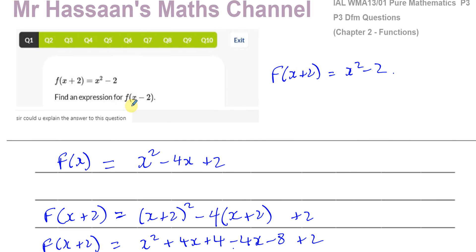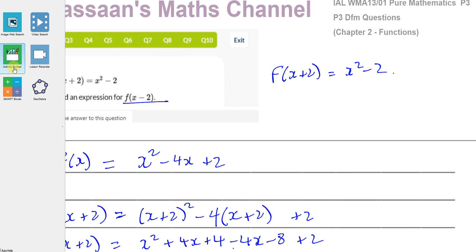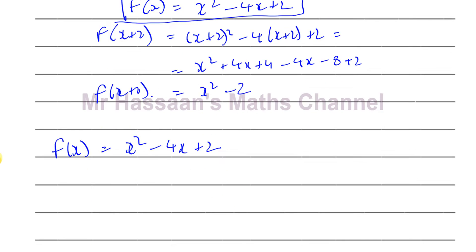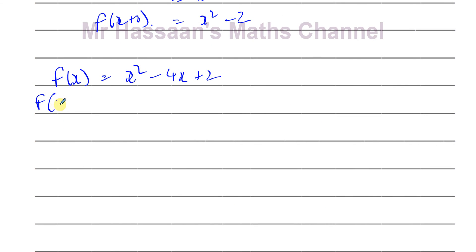It says, find an expression for f(x - 2). So now what we've got to do is substitute x minus 2 inside this function. So we replace the x with x minus 2. You have (x - 2) squared minus 4 times (x - 2) and plus 2, which gives you x squared minus 4x plus 4 minus 4x plus 8 plus 2. So you have x squared minus 8x plus 4 plus 8 is 12 plus 2 is 14. And there's your answer.